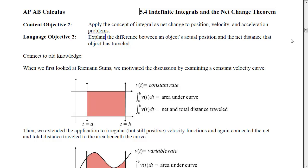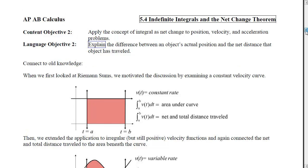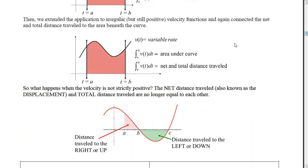First let's connect to what we've done already. When we first looked at Riemann sums, we motivated the discussion by examining a constant velocity curve. We had a v of t that was a horizontal line, and when we accumulated from a to b on that velocity curve, we got the area under the curve, and that area represented the net and total distance traveled. We then extended the application to irregular but still positive velocity functions, again connecting net and total distance to the area beneath the curve.